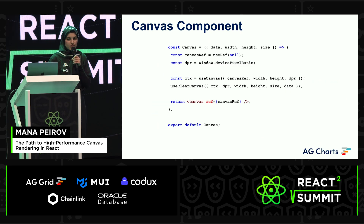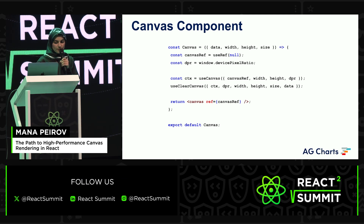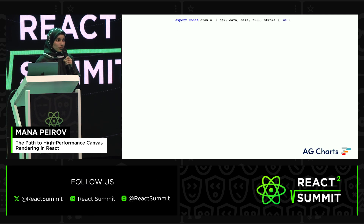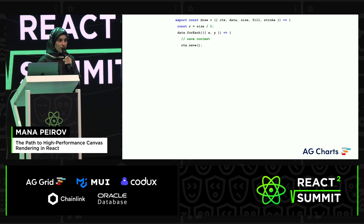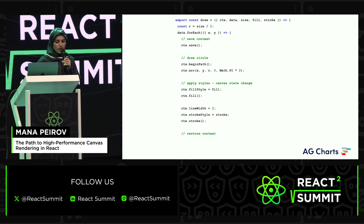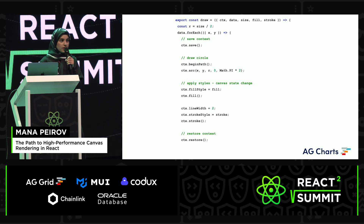For my React app, I created a React component that just returns an HTML Canvas element, and then made some custom hooks which set up the Canvas — sizing it, scaling it, and so on. The actual drawing method goes through my data, which is just an array of XY values. For each data point, I save the context, use begin path and arc to load the drawing commands at those coordinates, apply the styles like fill and stroke, invoke the drawing commands, then restore the state and move on to the next data point. This is the most basic way of using Canvas.